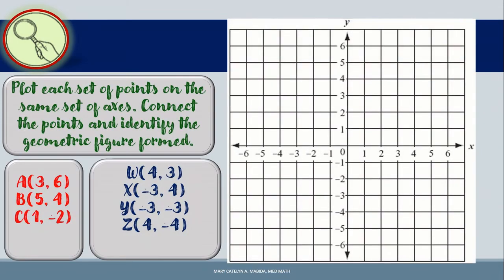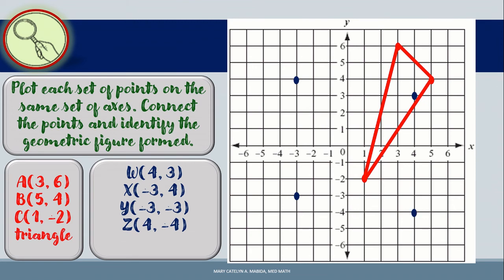Now let's take this last example: plot each set of points on the same set of axes, connect the points, and identify the geometric figure formed. For the red set: point A (3, 6), point B (5, 4), and point C (1, −2). Connecting the points, we have a triangle. For the blue set: W (4, 3), X (−3, 4), Y (−3, −3), and Z (4, −4). Connecting the points, we have a parallelogram.